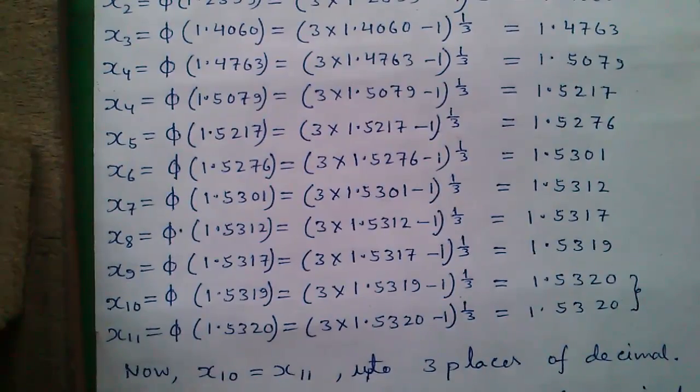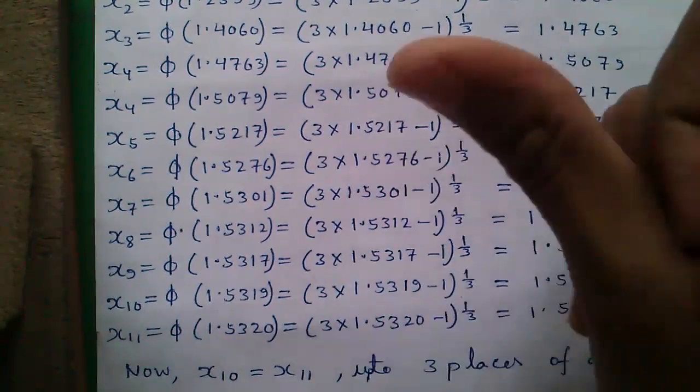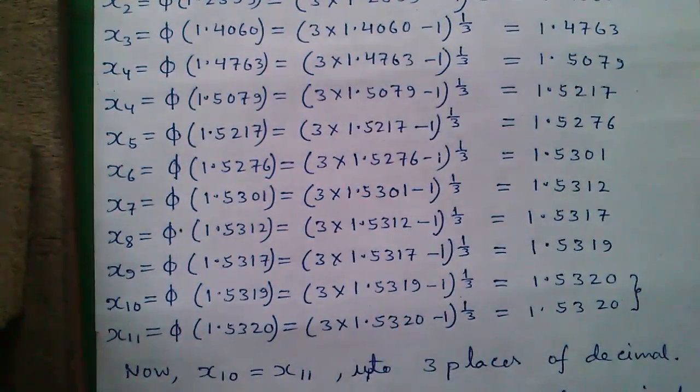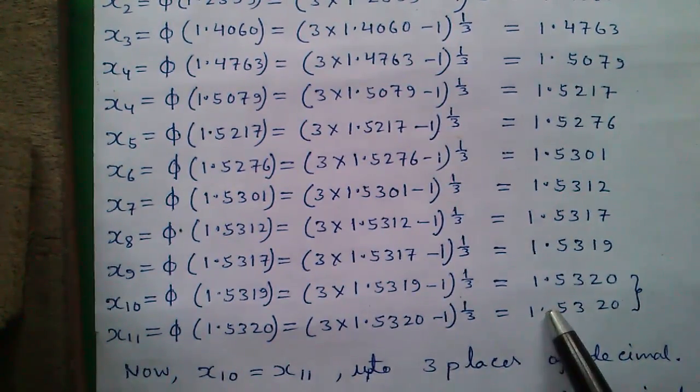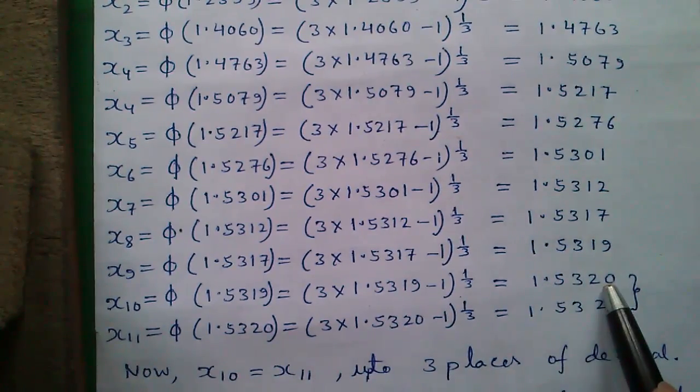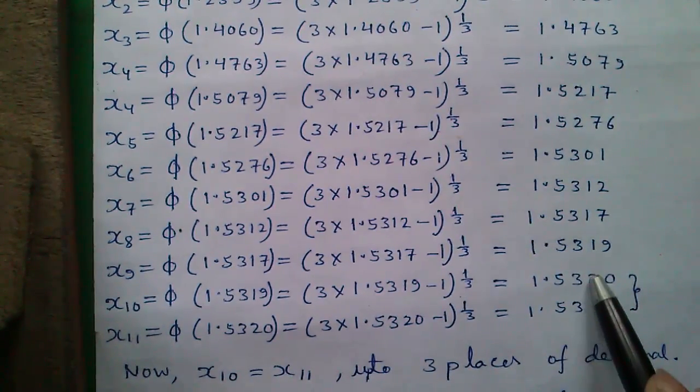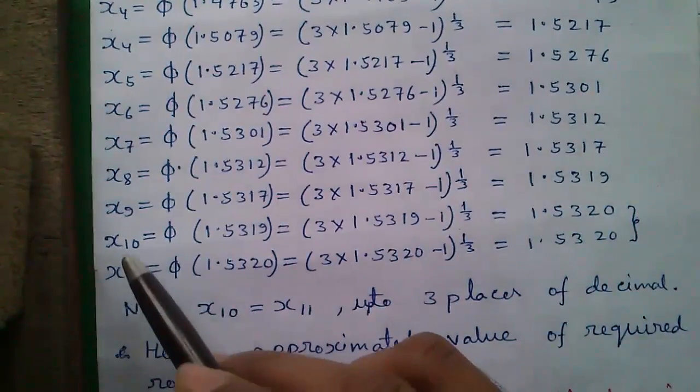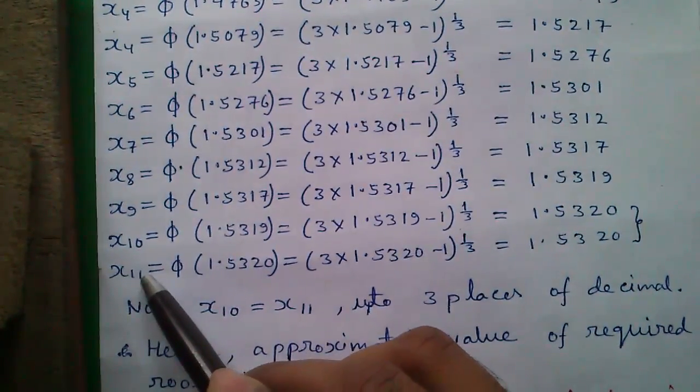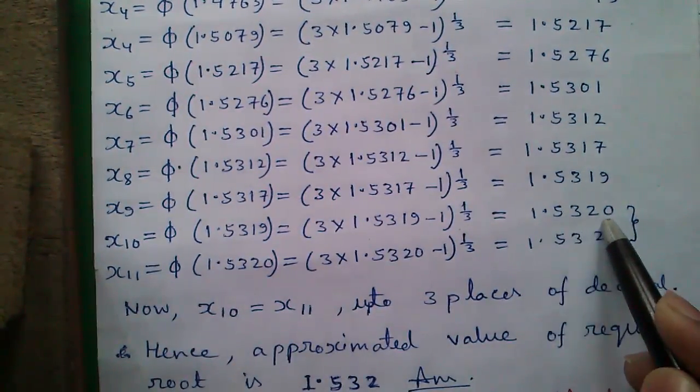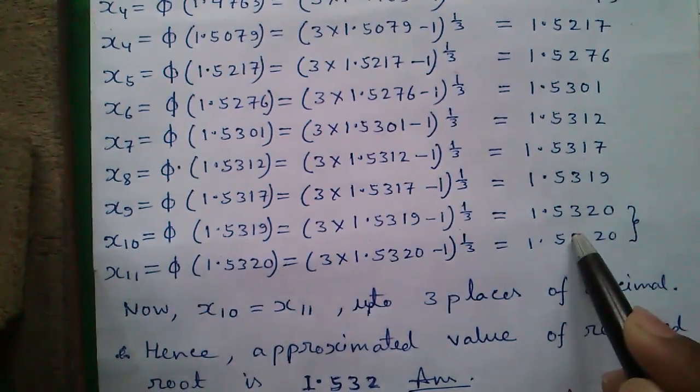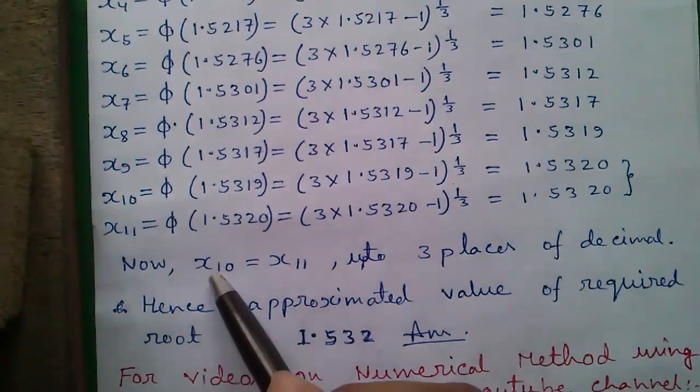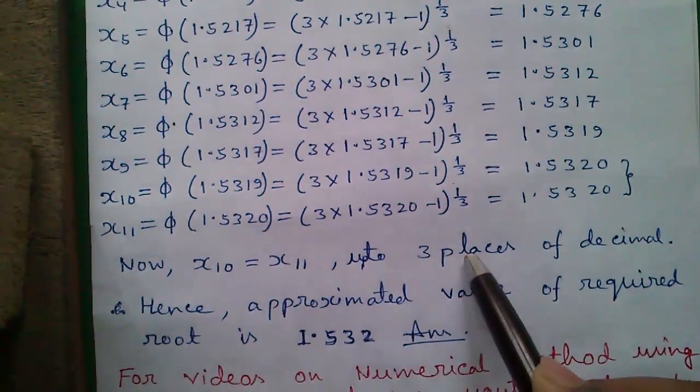So using our calculator, you can perform all the iterations very easily. Next question: when to stop our calculation? We will stop our iterations when we get the exact same value in successive iterations. So in iteration 10 and iteration 11, we got 1.532, the same value both times. So this is our correct answer. Now x₁₀ = x₁₁ up to 3 decimal places.